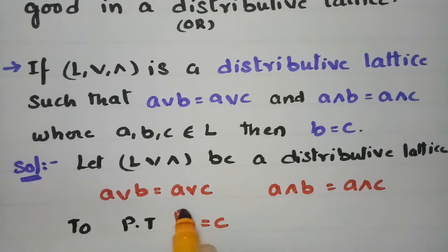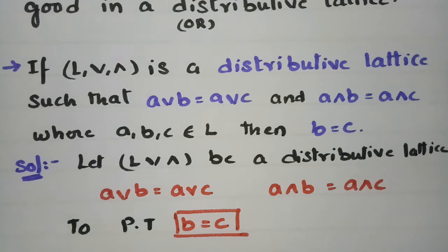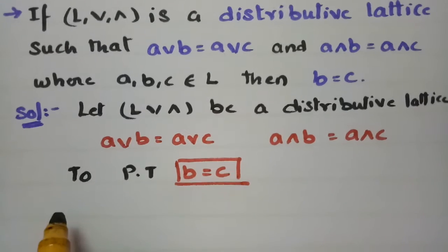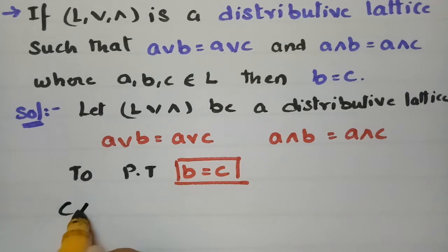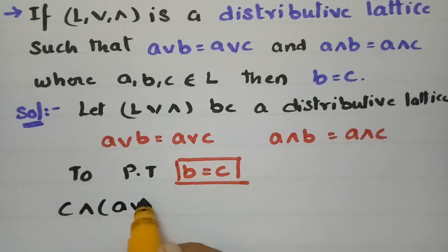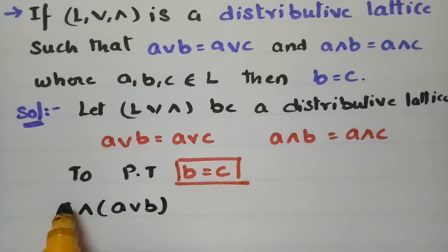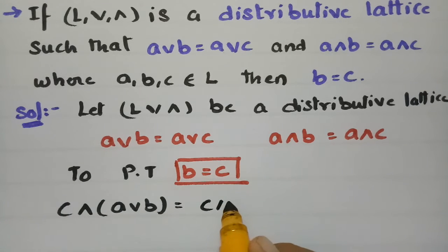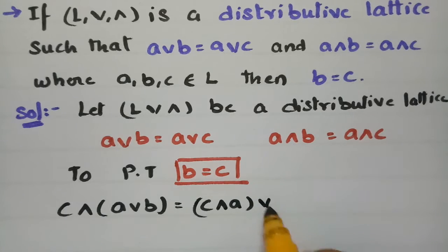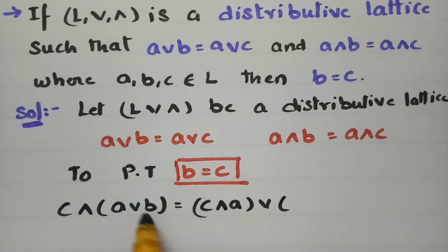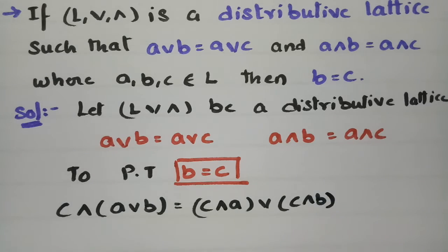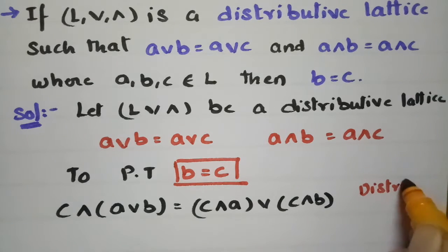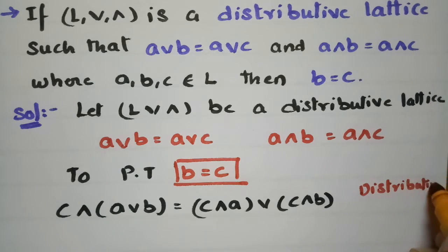Since L is a distributive lattice, I am considering c∧(a∨b). Since it is distributive, c is distributed to a as well as b: c∧(a∨b) = (c∧a)∨(c∧b). This is according to the distributive law.